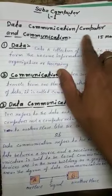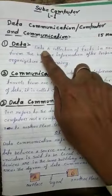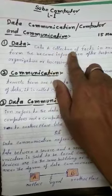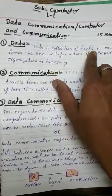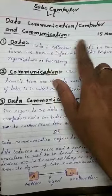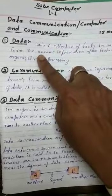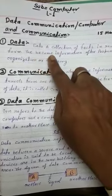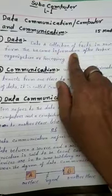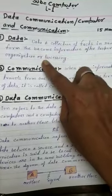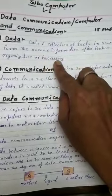First of all, data. Data is a collection of facts in raw form, becoming information after proper organization and processing.